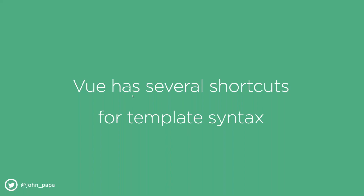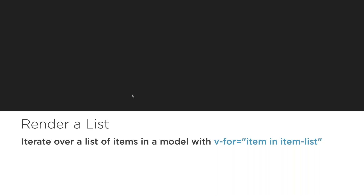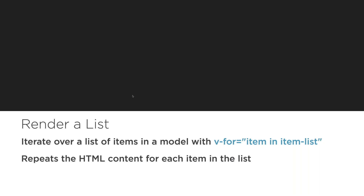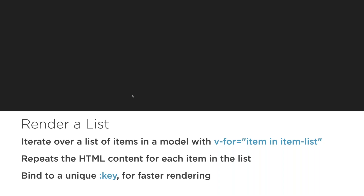Vue has several shortcut syntaxes for template directives. We've seen the colon shortcut for v-bind. For rendering lists we use v-for, which repeats over a list — for example 'v-for="item in itemList"'. You can also bind to a unique key for faster rendering, giving Vue a hint about row identity so it only re-renders rows with new or different keys rather than the entire list.